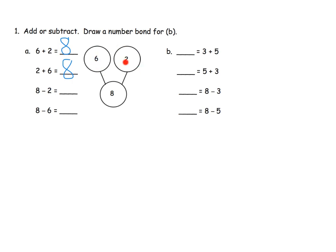We can see that in our number bond right here: 2 plus 6 equals 8. Now we have a little bit of subtraction. 8 minus 2, if our students want to just count backwards by 2 and get 6, that's fine. But we want them to be able to see that 8 minus 2 gives us 6 from our number bond, and then 8 minus 6 is 2 from our number bond.